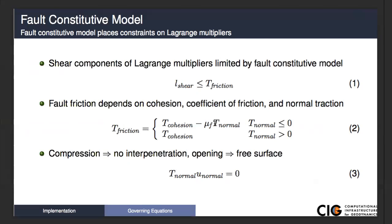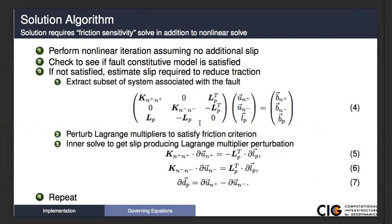If the normal traction is less than zero, this gives a positive term: minus the coefficient of friction (which is positive) times a negative normal traction gives a positive result. In our fault implementation, we have a symmetric sparse matrix across the fault with the Lagrange multipliers, and unknowns with relative displacements. In solving the friction, we perturb the Lagrange multipliers to satisfy the friction criteria, and to determine how much we need to change the Lagrange multiplier we do this inner friction sensitivity solve.